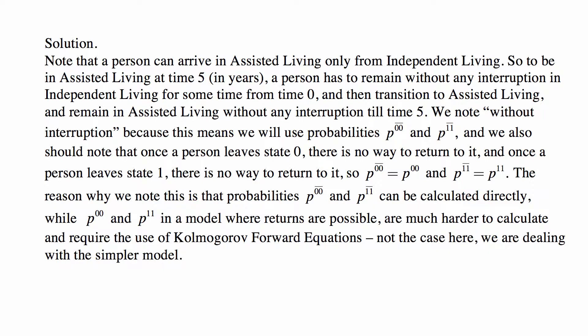I note this thing without interruption because this means that we will use probabilities P00 with a line above it. That means continuously staying in state zero. And then 11 with a line above it. It means probability of starting from state one, ending in state one, and being in state one continuously between the two types.